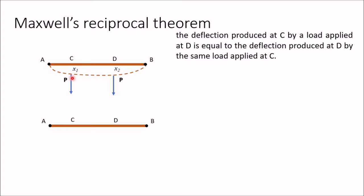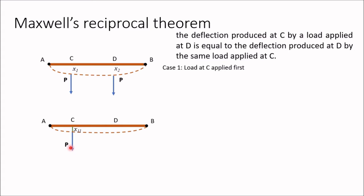Now consider beam AB where load at C is applied first. Because of this load, AB will deflect, and C will deflect by an amount X11 — deflection of point 1 because of load 1. Similarly, point D is designated as point 2, so X21 is the deflection of point 2 because of load 1. Because of this P applied at C, point D also deflects by an amount X21.